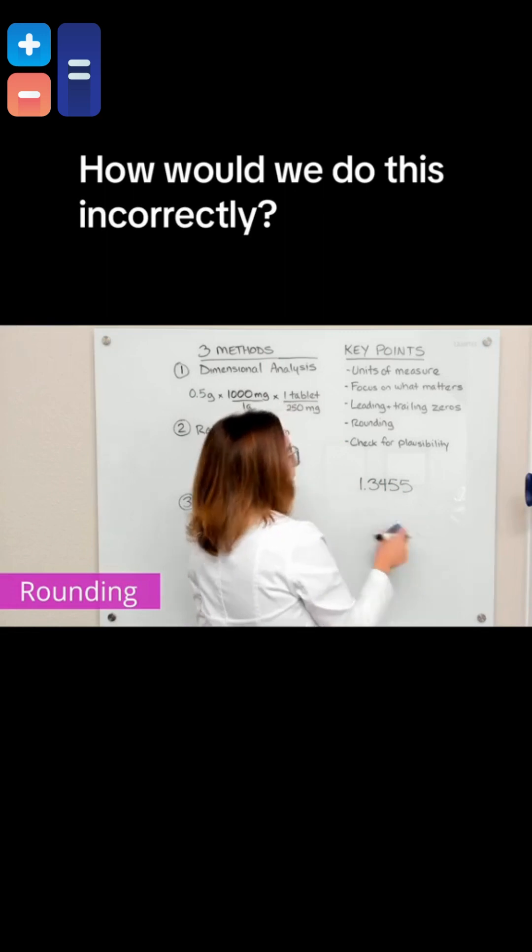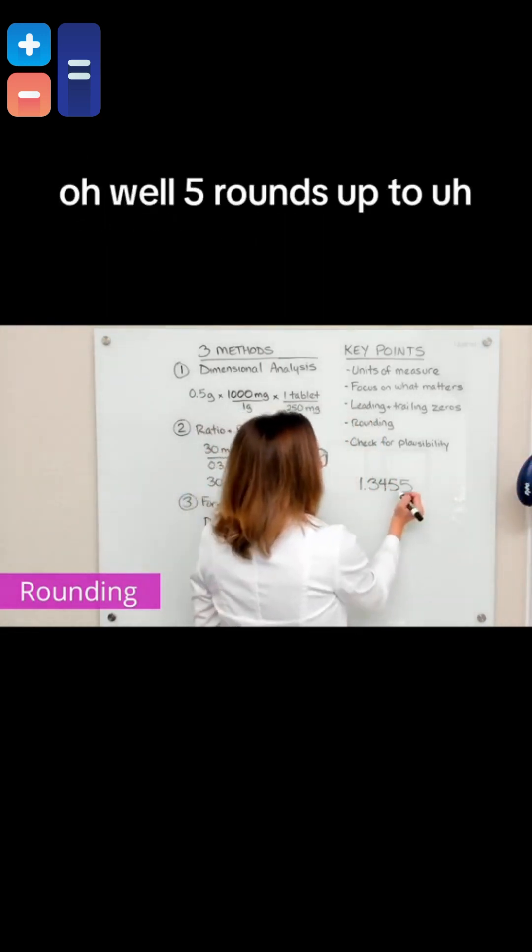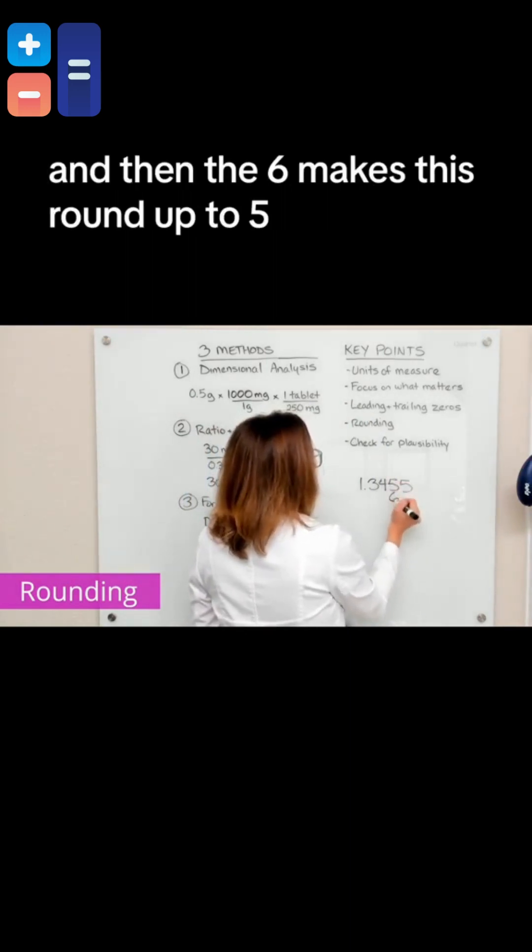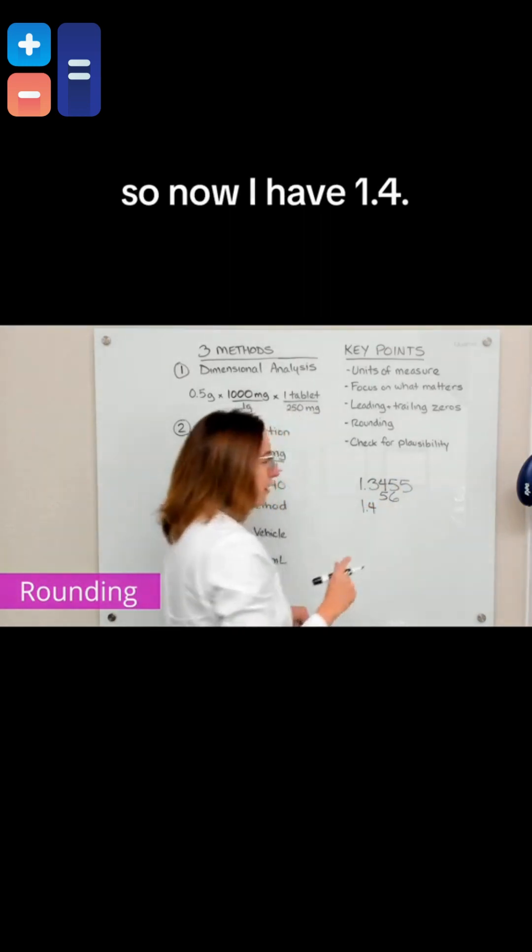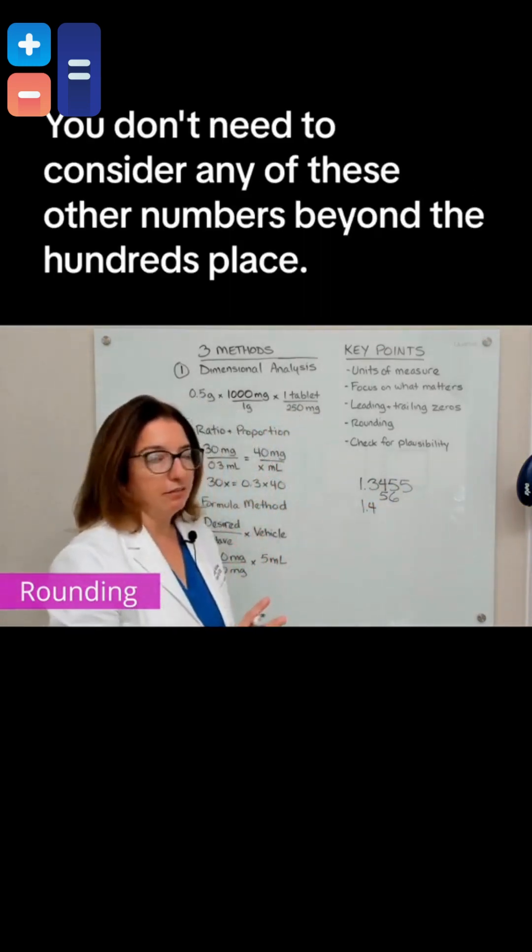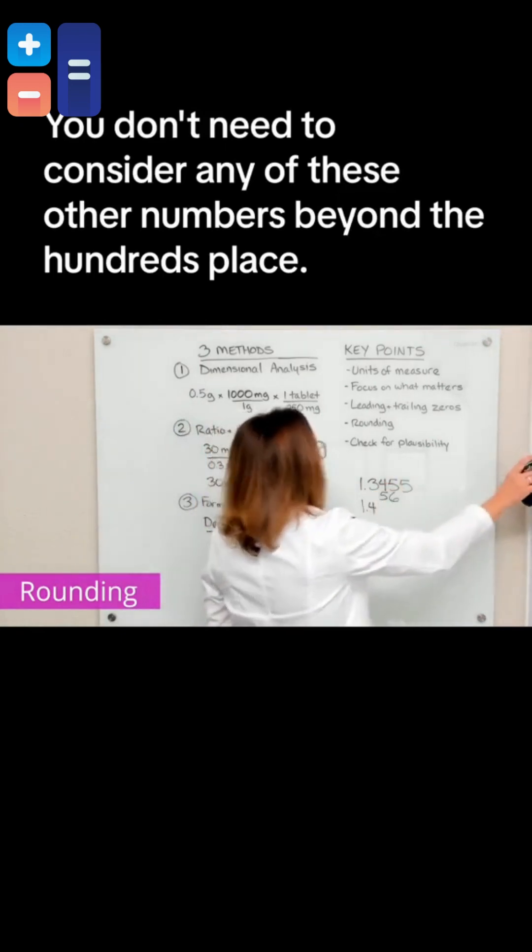How would we do this incorrectly? Sometimes students will be like, oh, well, five rounds up to makes this round up to six. And then this six makes this round up to five. And that five would make this round up to four. So now I have 1.4. You don't want to do that. You don't need to consider any of these other numbers beyond the hundredths place.